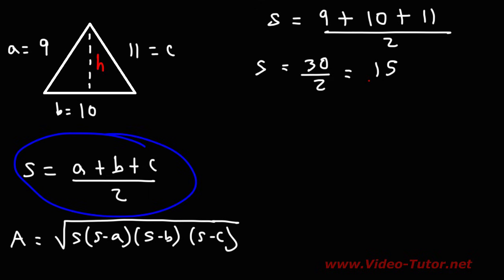So now we have the value of S. Now let's use this formula to calculate the area of the triangle. So it's going to be the square root of S. S is 15.